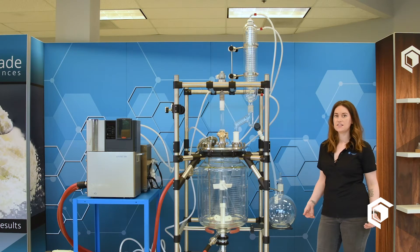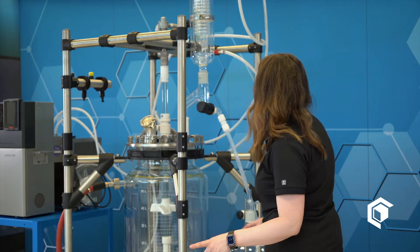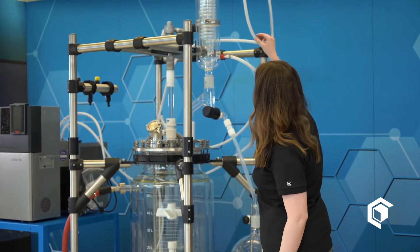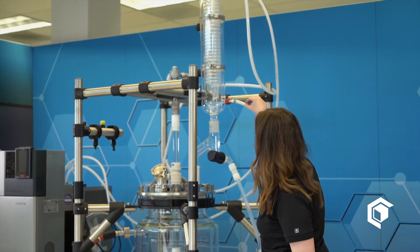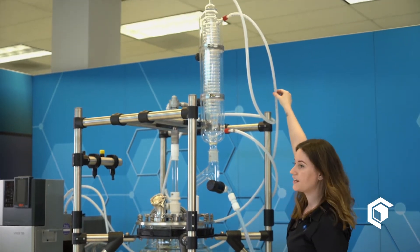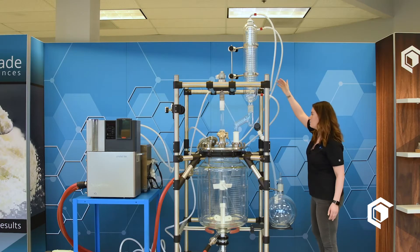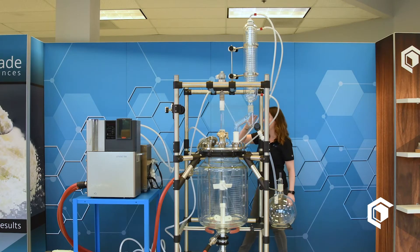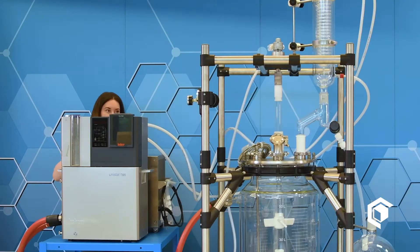So next we're going to connect the chiller for your condenser. The output is connected to this lower barb right here, and then the input is connected to the second to the top. These will be fed along the back with braided hose over to your chiller.